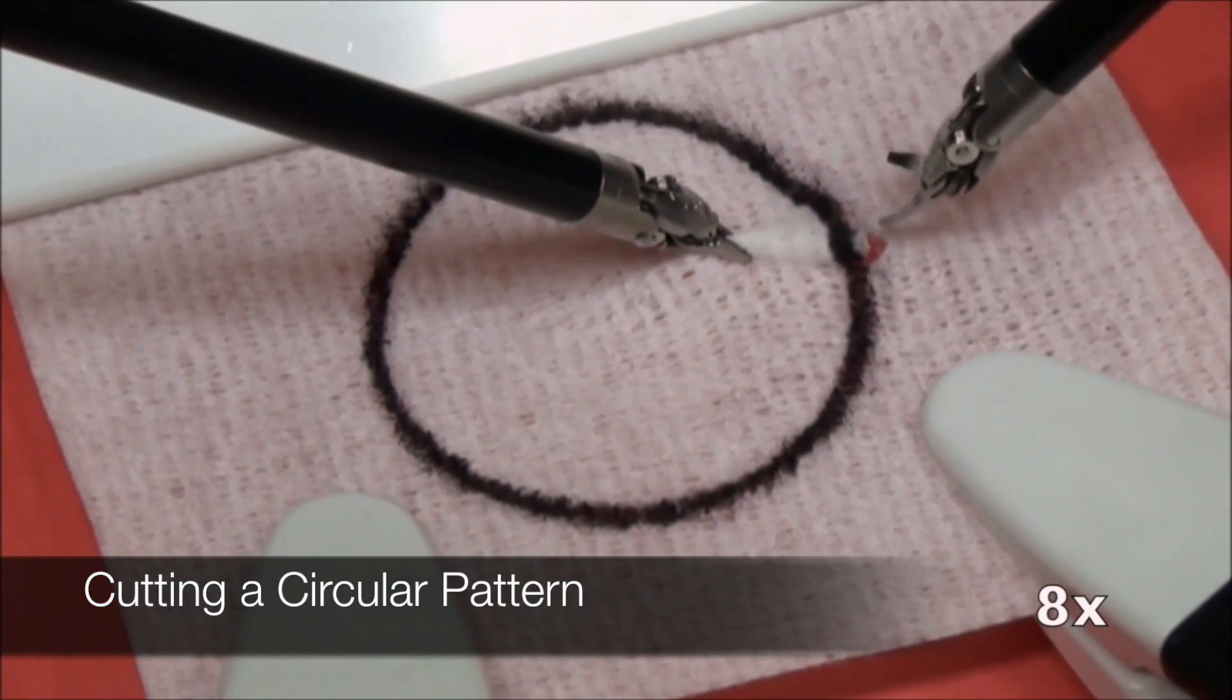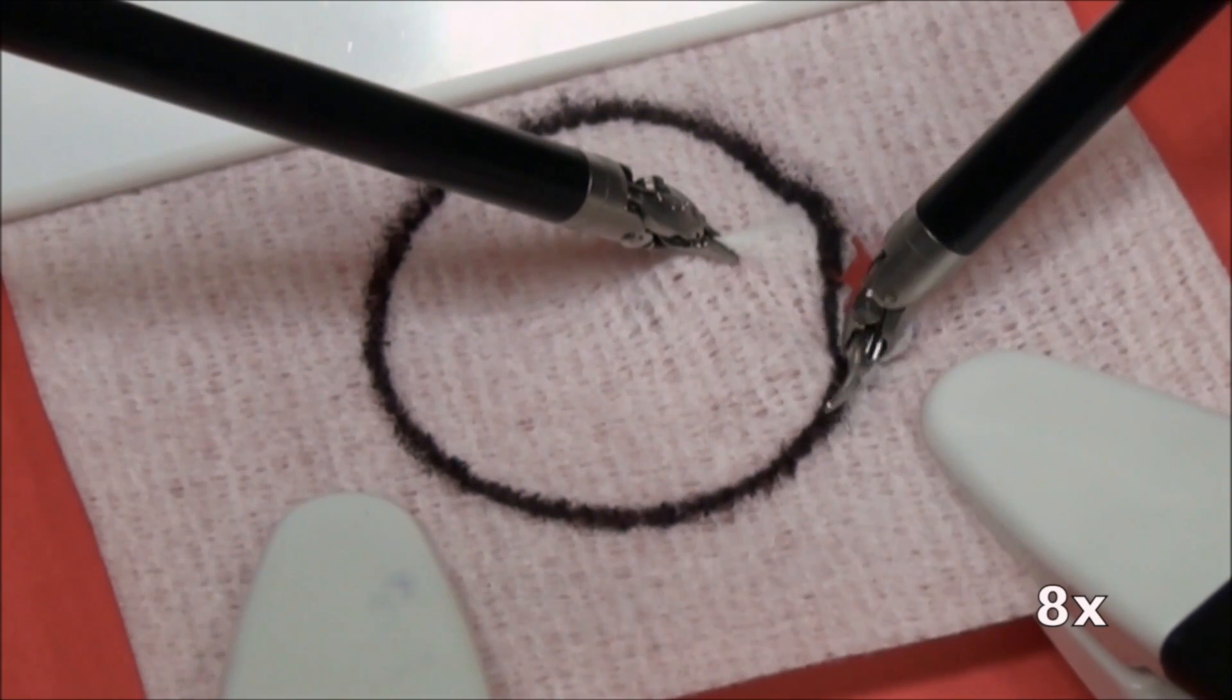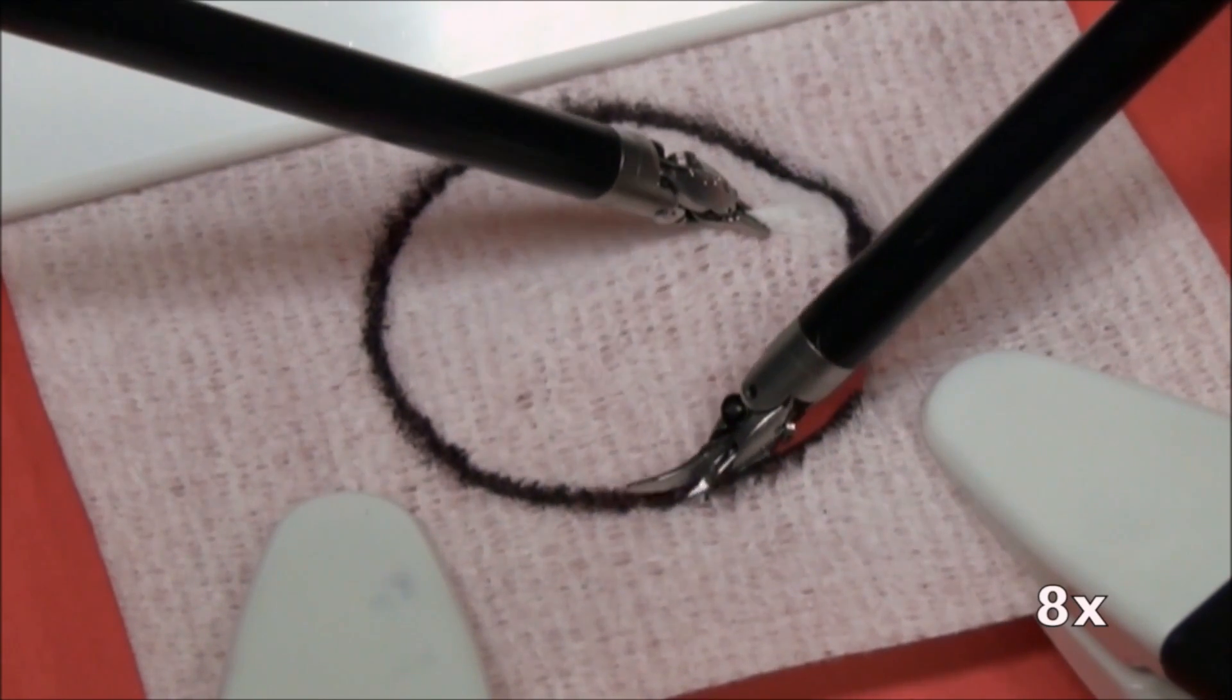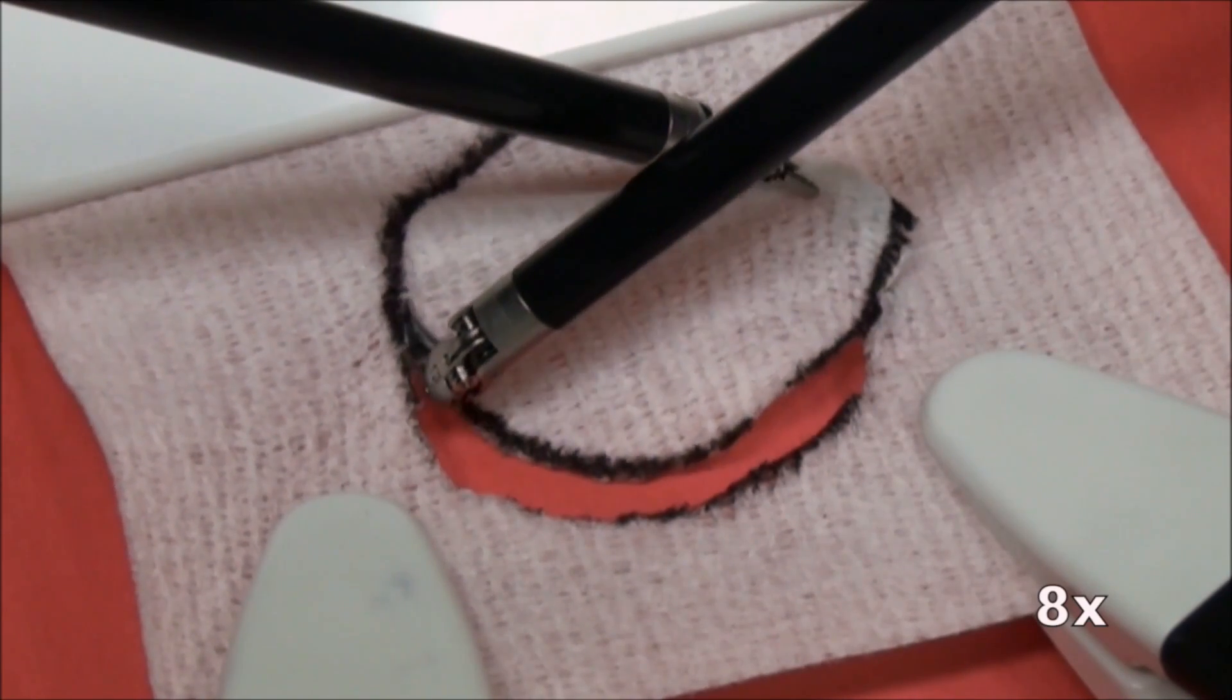This subtask is from a laparoscopic surgeon's training kit, cutting a circular pattern from a sheet of gauze. A computer vision system identifies the circle and guides the robot to cut along the lower and upper halves. The second gripper stretches the gauze, while the first gripper cuts the pattern.